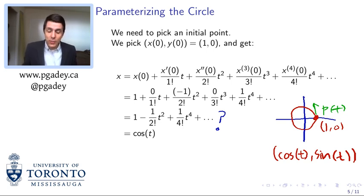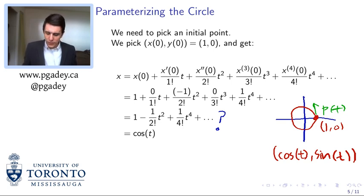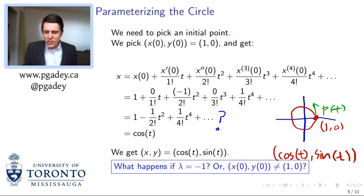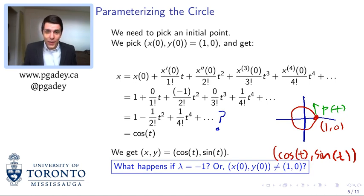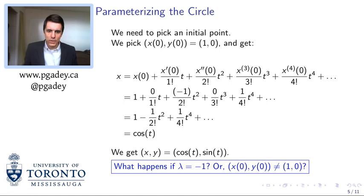Our usual parameterization of the circle is cosine, sine — so x has to be cosine. This gives us a very natural derivation of the power series of cosine, derived entirely from the geometric properties of the circle using only implicit differentiation. So we get cosine and sine. As a bit of a question: what would happen if we had chosen lambda as negative 1, or if we had chosen a point that wasn't (1, 0)? We'll post our answers online.